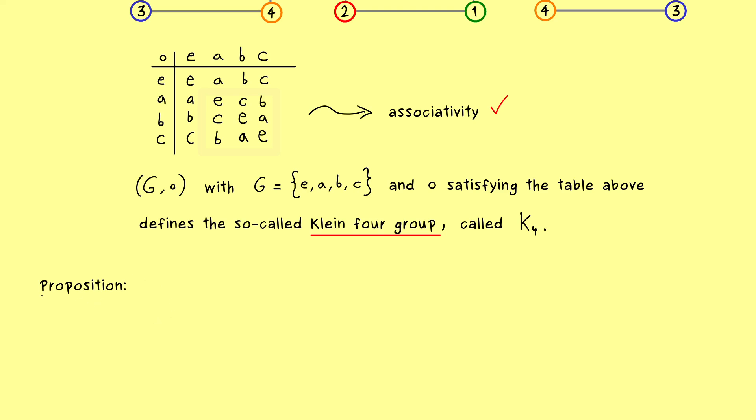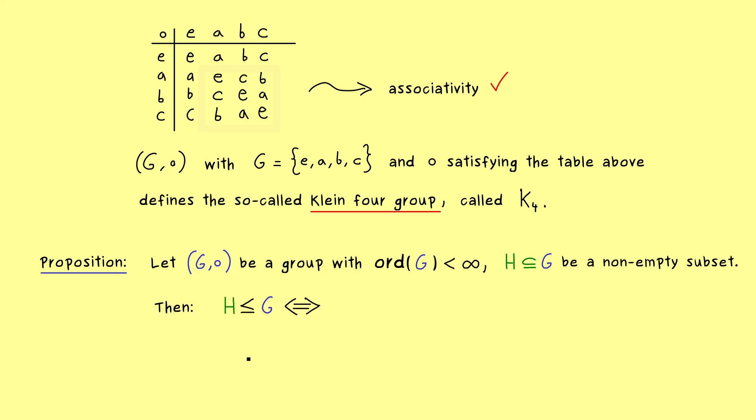But we can also simplify this for finite groups. This means now we assume that the order of our group G is finite. So this is the only additional information we put into this proposition here. Therefore, we still assume that H is a non-empty subset in G, and then we still have the equivalence from above: H is a subgroup in G if and only if one condition is satisfied. Indeed, the first condition is already sufficient for having a subgroup. So this makes everything much simpler, because it means you only have to check that the binary operation is well defined on H, and then you already know that H is actually a subgroup of G.